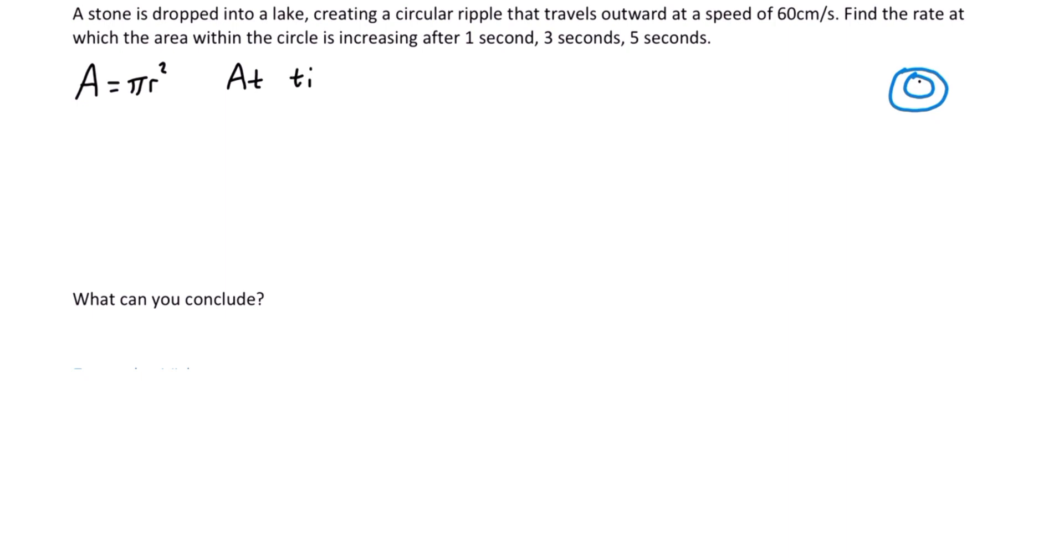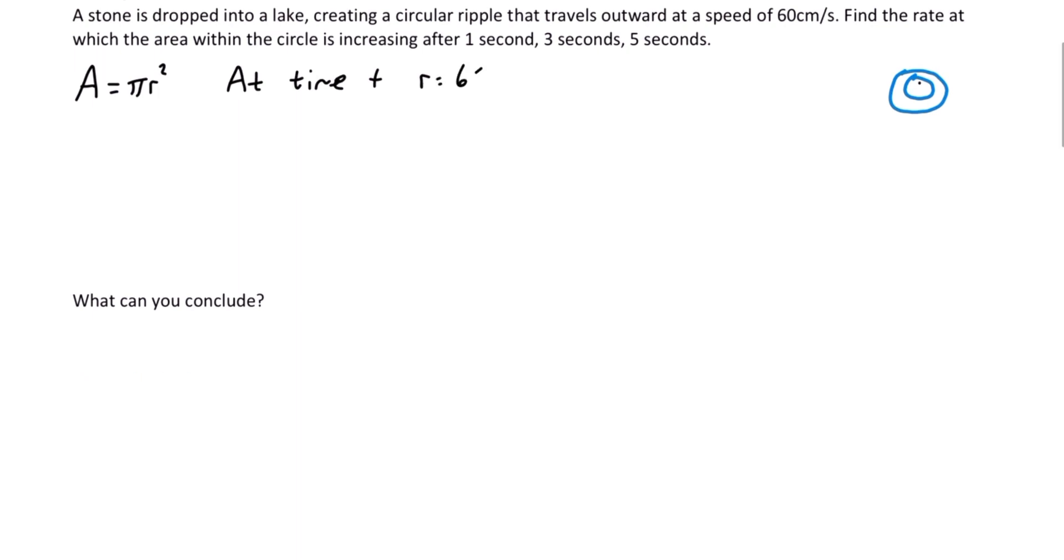At time t, r is equal to 60 times t, because we're told that the ripples are traveling out at a speed of 60 centimeters per second.